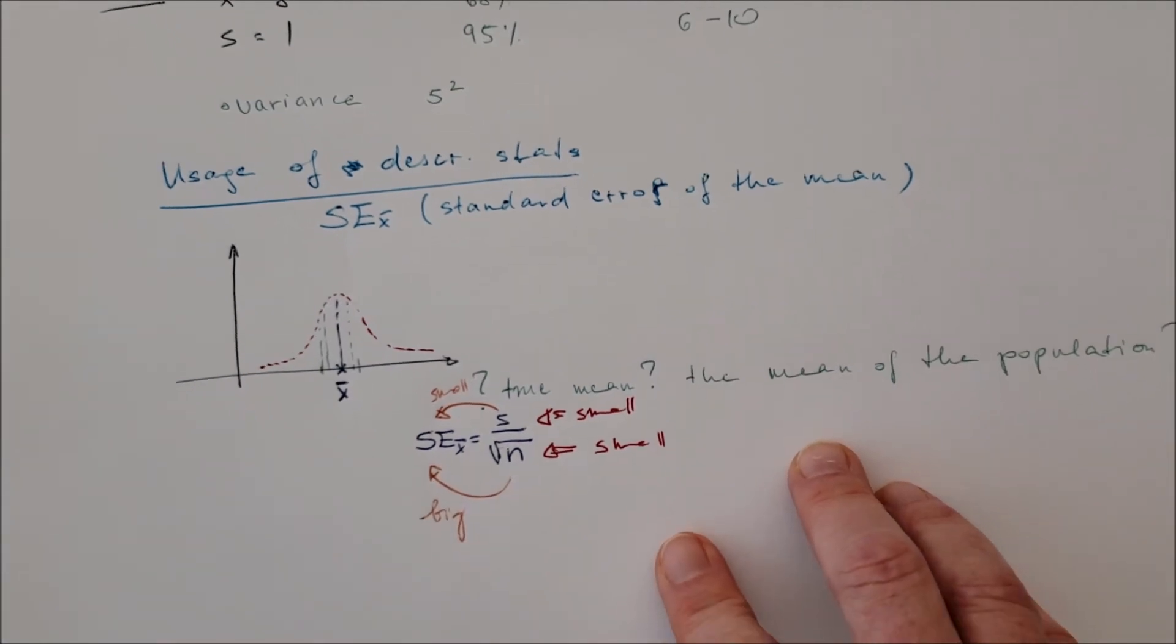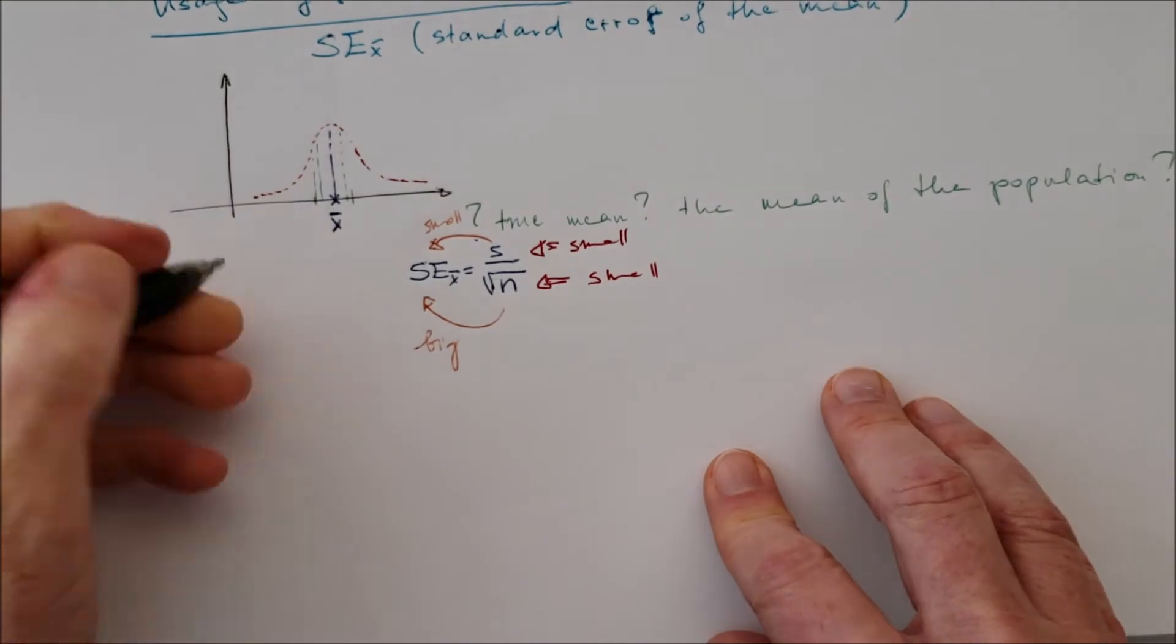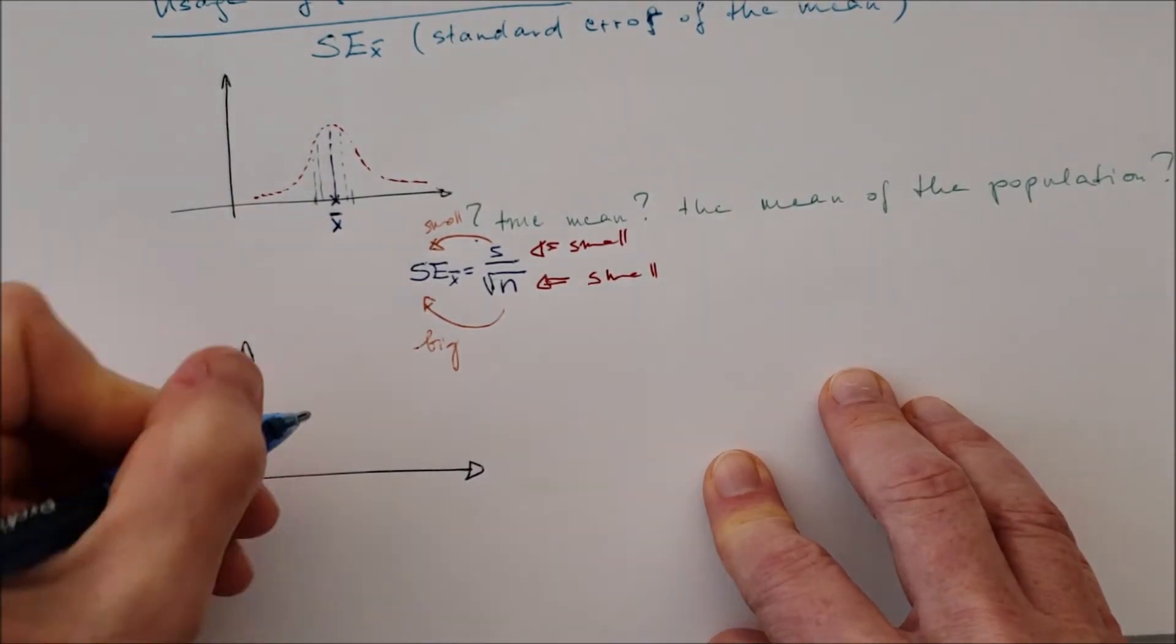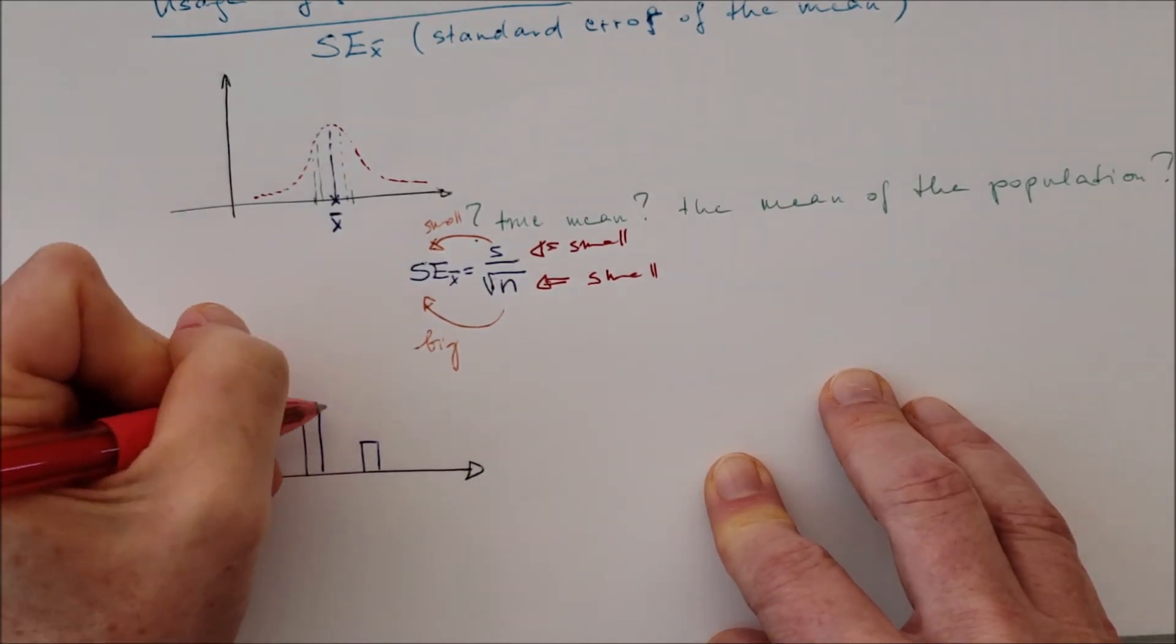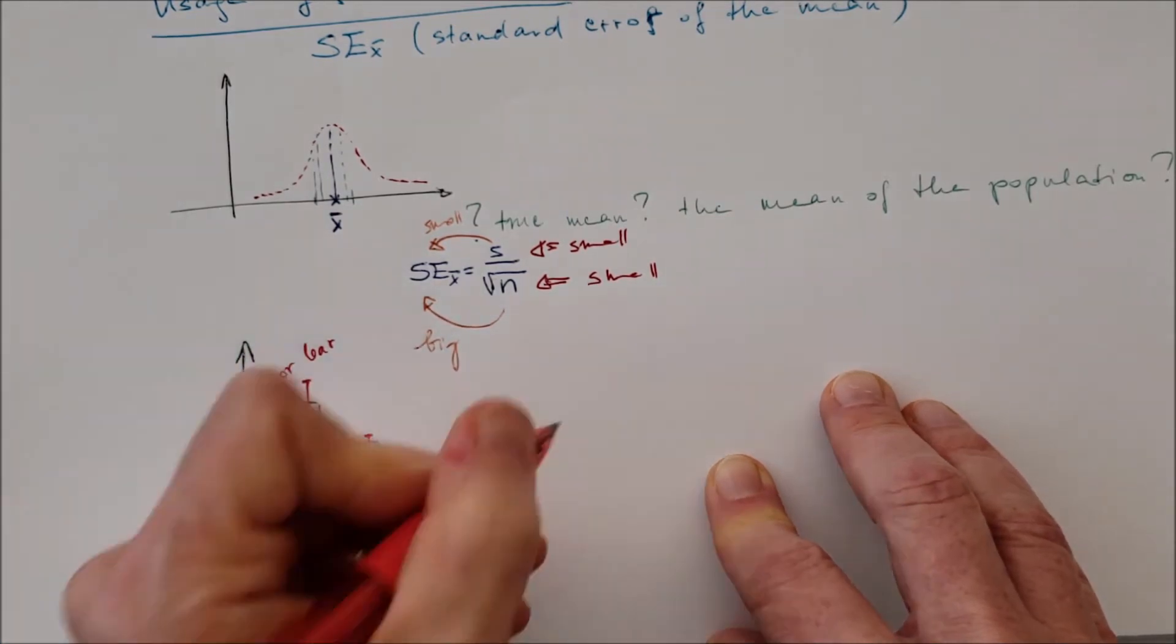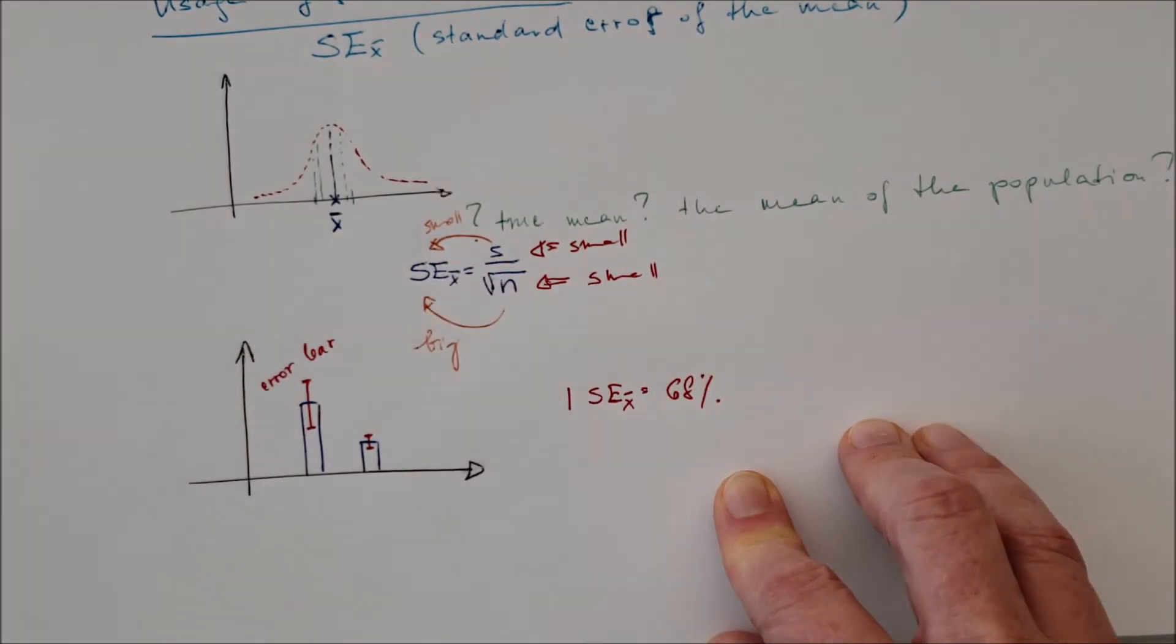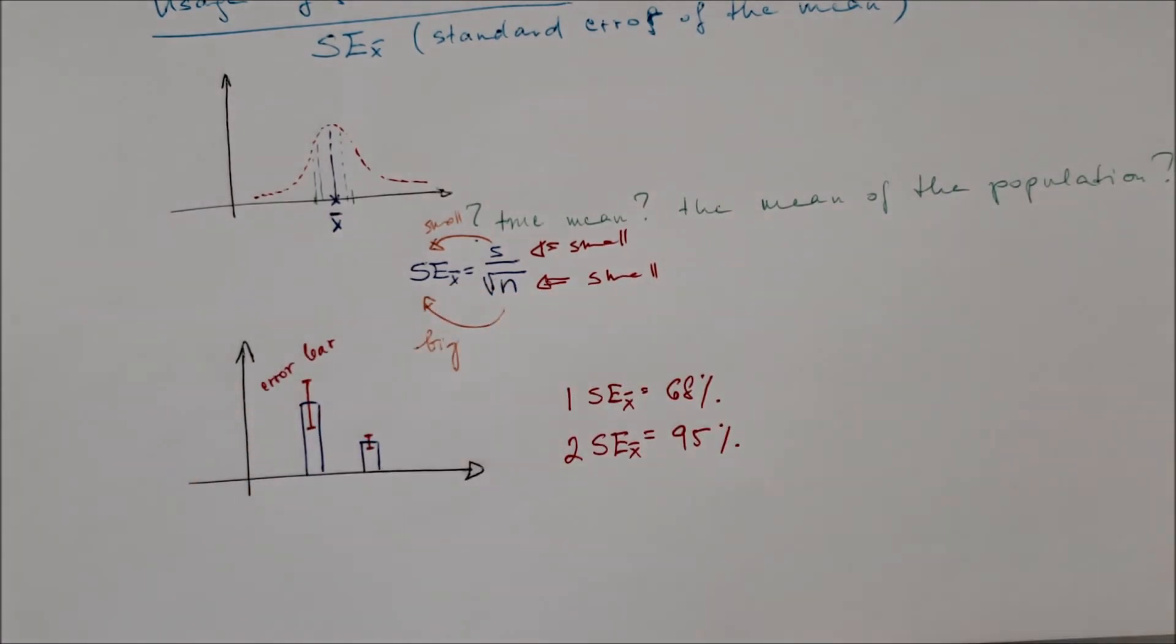So visualizing the standard error, we are going to use error bars. So we have the bars, a bar graph for example, for the values, and we have the error bars. These represents the range of the dependent variable where the true mean of the population would occur.